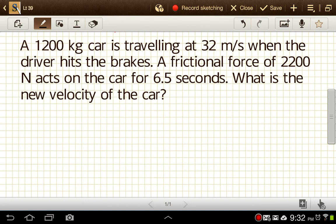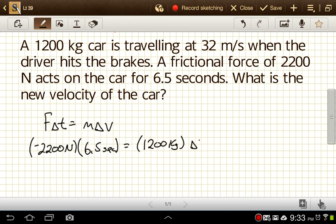So we'll do this one as F·Δt equals m·Δv. So our force here is going to be 2200 newtons, and that's going to be acting in the opposite direction as that starting velocity. So I'm going to make that a negative 2200 newtons times the time, 6.5 seconds, is equal to our mass, 1200 kilograms, times the change in velocity.